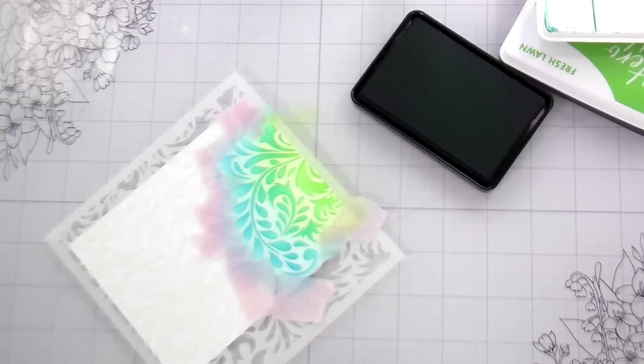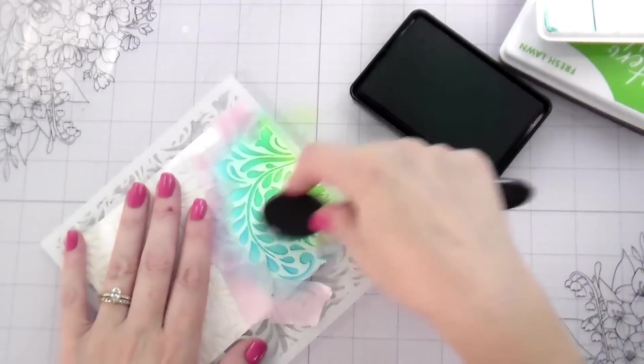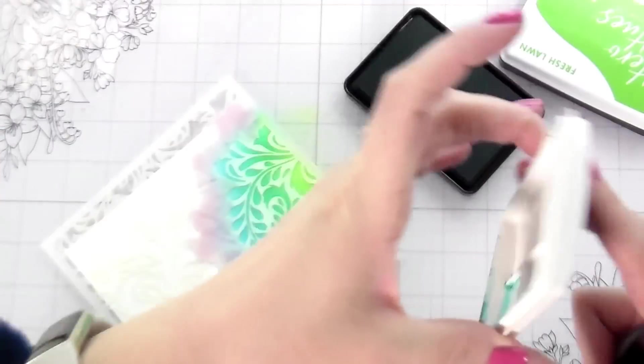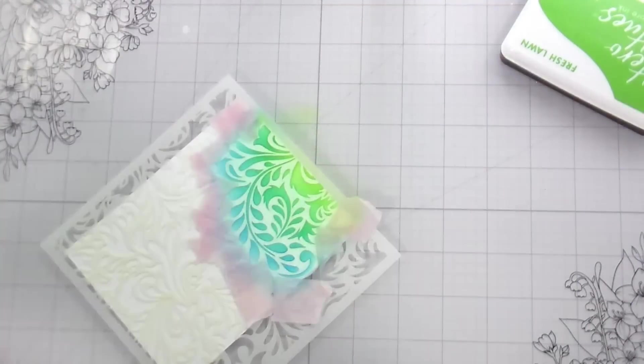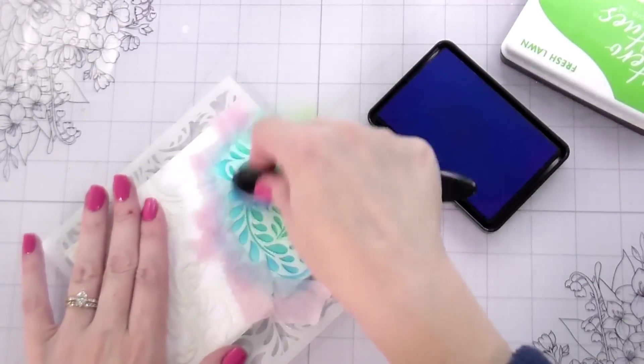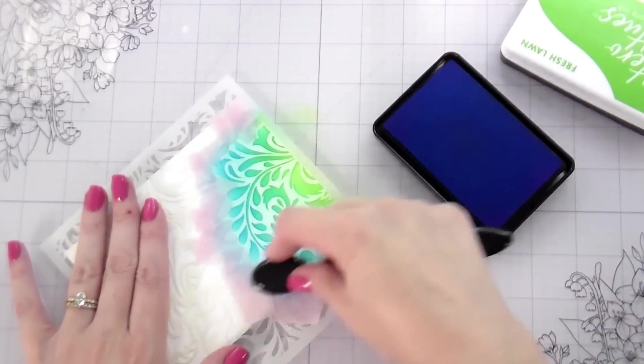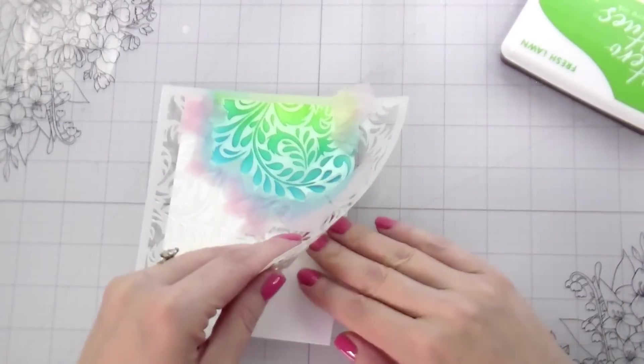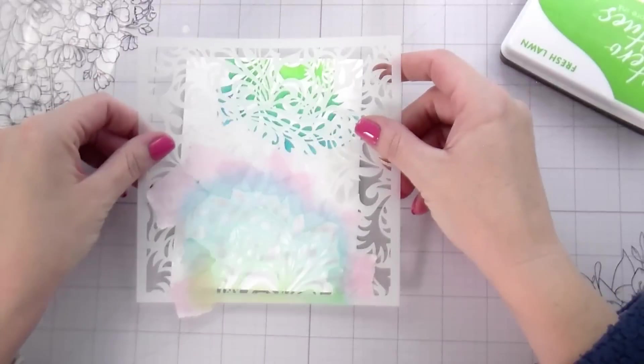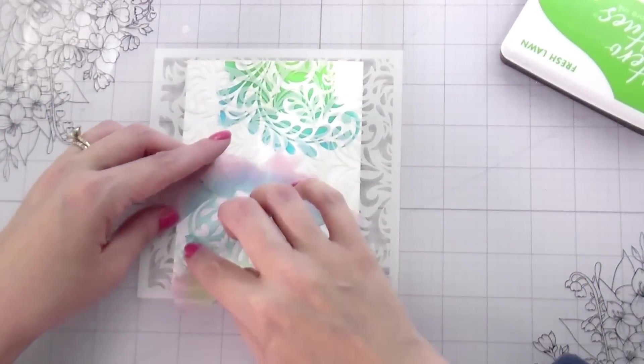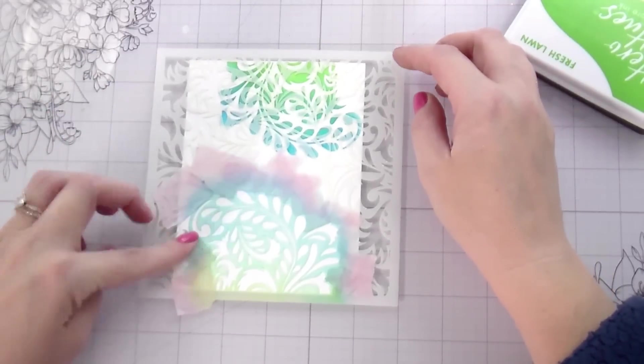And I like to do my ink blending twice just cause I like a bit of bolder color. But you can do, again, you can do it however you want to do it. I'm here to encourage you to create your own pretty cards. I think that that's a good idea. I think you should do it. So then once this is done, I can then remove this stencil. Here's the isolated design. And then I'm just going to turn it right around and do the bottom section with that same.